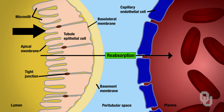When we're reabsorbing, we want to take our solutes, water, and sugar from the lumen of the proximal convoluted tubule and move them into the plasma. Keep in mind that most reabsorption occurs in the proximal convoluted tubule.